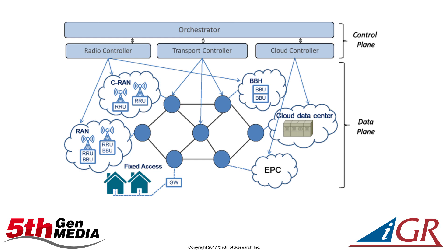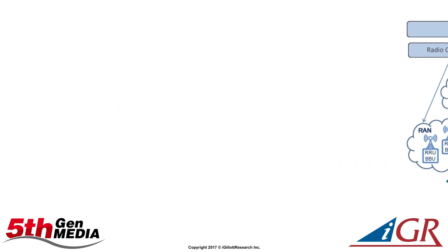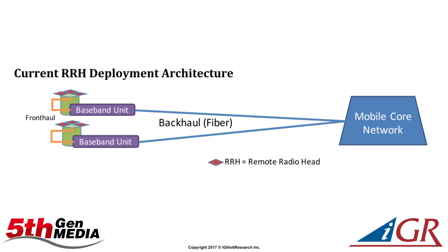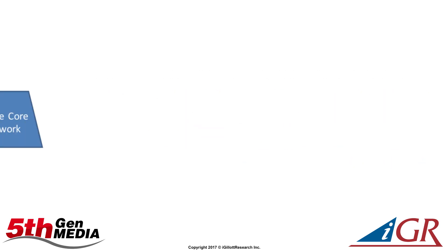This is the equipment at the local cell tower that communicates wirelessly with your smartphone or mobile device. In a typical RAN architecture today, the radios at the top of the tower are connected via fiber to the BBUs in a secure, climate-controlled enclosure at the bottom of the tower. The BBUs are then connected via fiber backhaul to the mobile core.